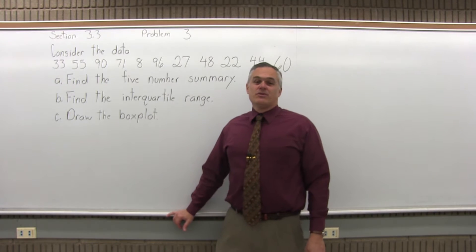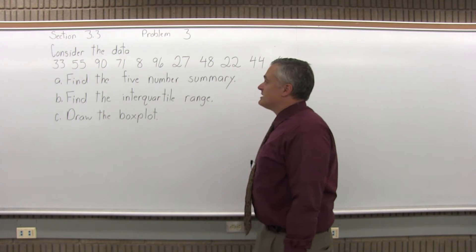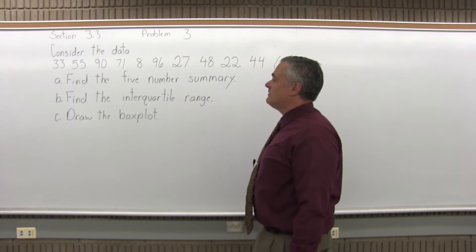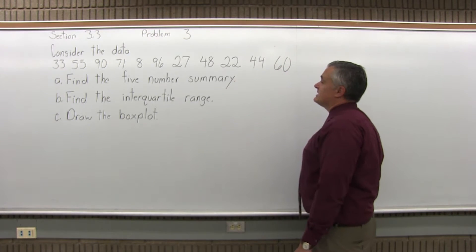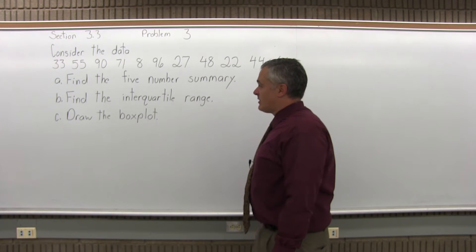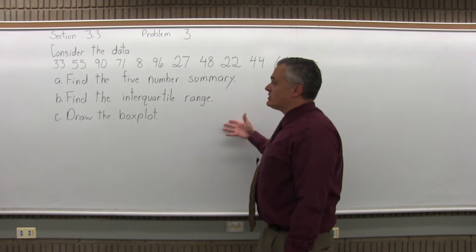This is Section 3.3, Problem 3. It says consider the data: 33, 55, 90, 71, 8, 96, 27, 48, 22, 44, and 60. Find the five number summary, find the interquartile range, and draw the box plot.